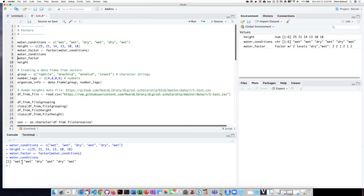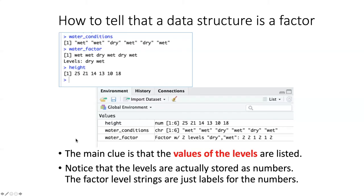We can display the factor and we can also display the numeric vectors. If we want to tell whether a data structure is a factor or a vector of strings, we can tell in two ways. One way is that if it's a vector of strings, each of the items is in quotation marks. Here we can see specifically it's identified as character strings. If the data structure is a factor, then we see that the levels of the factor are not in quotation marks and they are identified as levels. And it's specifically noted that this is a factor with two levels.